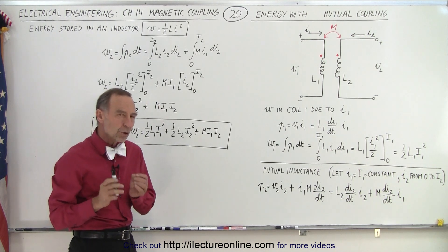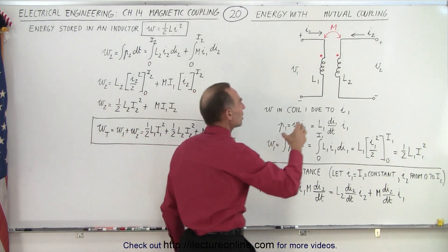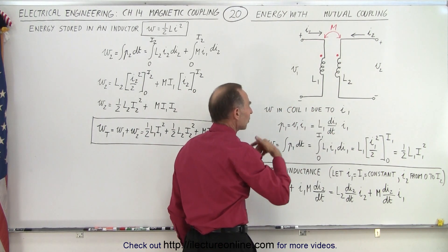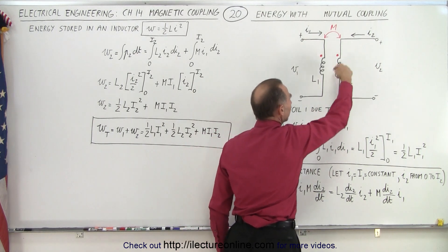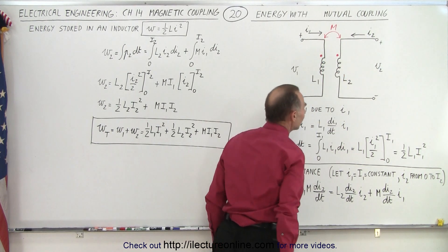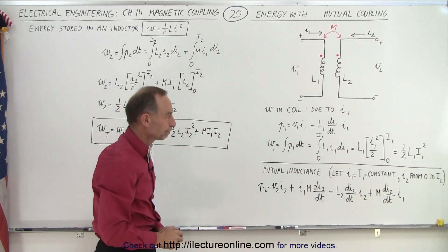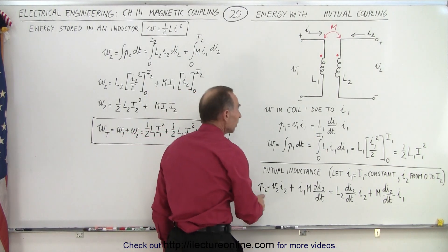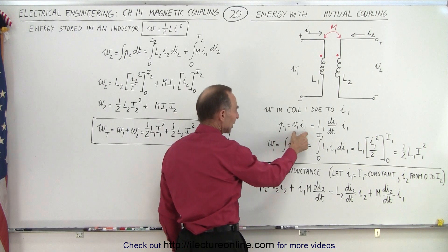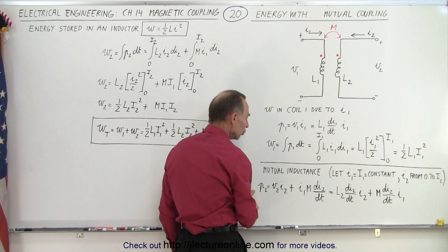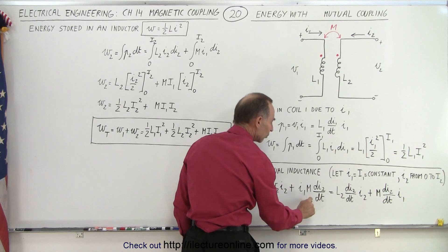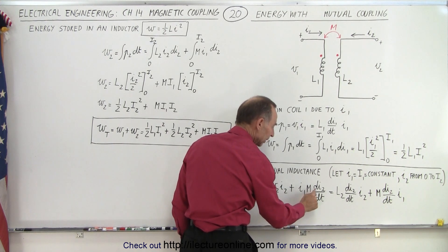But now how do we deal with the mutual inductance? We want to find the energy stored in L2. We have to include the energy L2 has because of current i2, and also because of the mutual inductance between the two, meaning it is also affected by i1. So the power for L2 is V2·I2, just like P1 = V1·I1, but also due to the mutual inductance: i times the voltage induced by the mutual coupling, which is M times di/dt.